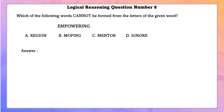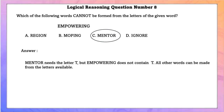Logical reasoning question number 8. Which of the following words cannot be formed from the letters of the given word? 'Mentor' needs the letter T, but 'empowering' does not contain the letter T. All other words can be made from the available letters.